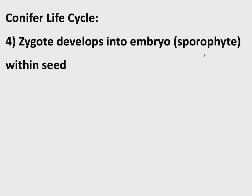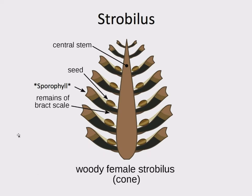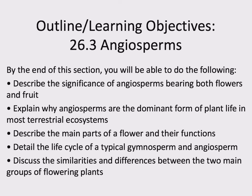Egg plus sperm equals zygote, and from there the zygote develops into an embryo — going back to the sporophyte stage, diploid, within the seed. Here's the pine seed; this is the embryo growing within the seed. The seeds are then dispersed, usually in the form of a pine cone, and can grow into another tree. That's the conifer life cycle. Now we are ready to talk about the final group of plants: angiosperms.